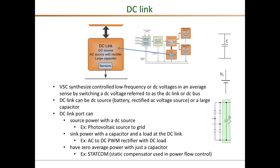Voltage source converters are characterized by having a voltage DC link. In rough terms, the voltage source converter operates by synthesizing a controlled low-frequency AC waveform like 60 Hz, or DC voltage for DC-to-DC converters, in an average sense. This is done by switching the DC link voltage at very high frequencies such that the average value corresponds to the required 60 Hz or DC voltage. It should also be noted that the DC link can be a source of power — like in the case of a central PV inverter where the PV source forms the DC link — or it can be the load voltage in power factor correction circuits, or simply an interface of power between two different ports.